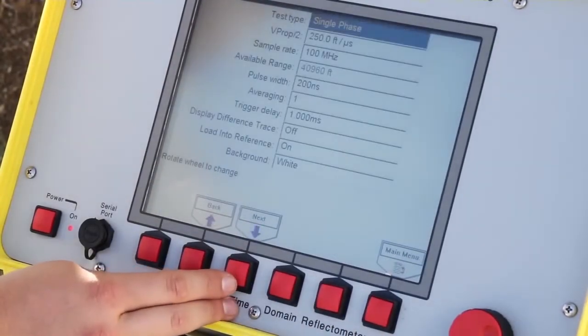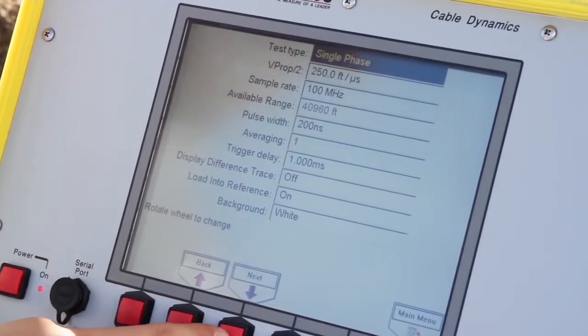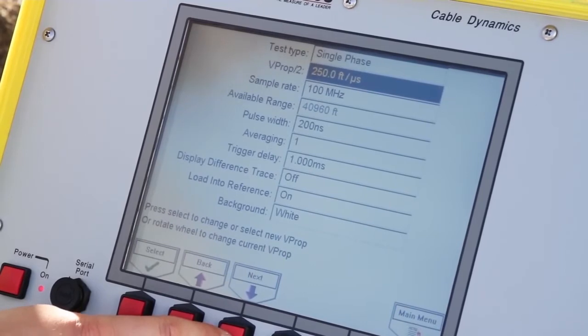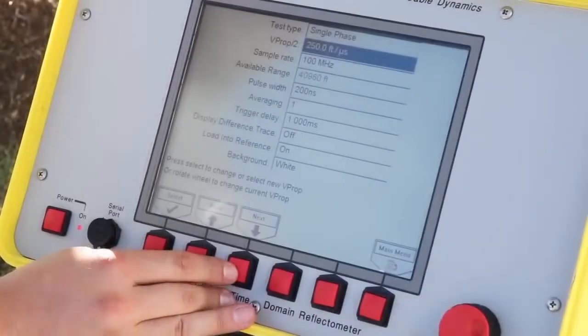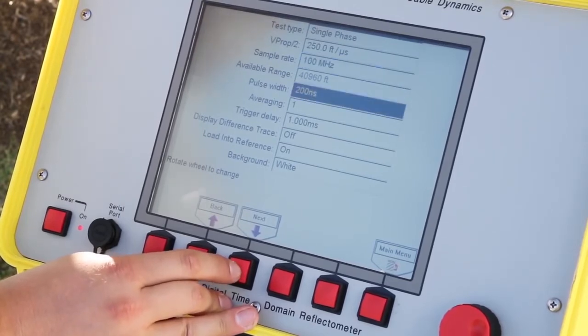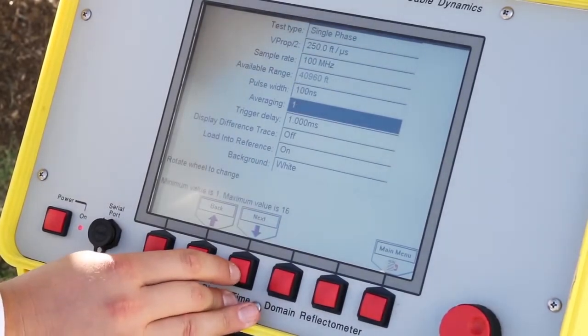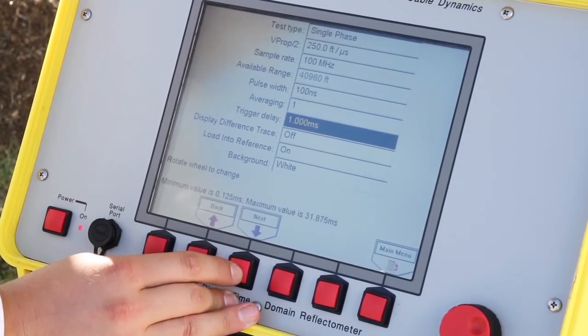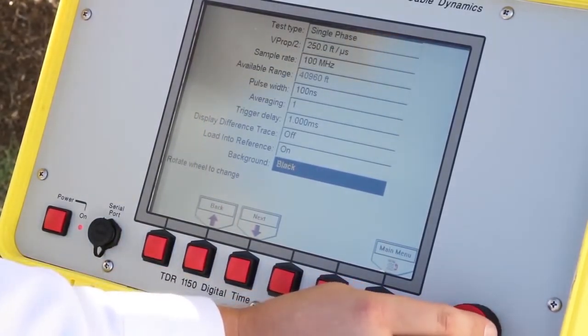Next are the settings in the setup menu. First is test type, either single phase or three phase. Next is velocity of propagation, which is preset at 250 feet per microseconds. It can be adjusted depending on the type of cable. Sample rate adjusts the speed of capture of the measurement system and should be preset at 100 megahertz. Pulse width allows the user to select the pulse width to be used on the system for measuring the fault position. Averaging sets how many data captures are performed for each trace drawing. This is normally set to one. Trigger delay sets how long the data capture system waits in arc reflect mode after the thumper has been fired before starting the data acquisition process. Background allows the color scheme used by the system to be set. It is either black or white.